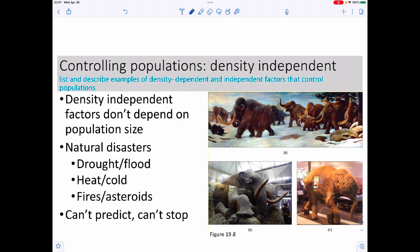There are two different ways that populations get controlled. One is density-independent, meaning it has nothing to do with population size. This would be something like a natural disaster: drought, flood, extreme heat or cold, fire, or an asteroid hitting Earth. You can't predict when these happen or stop them.